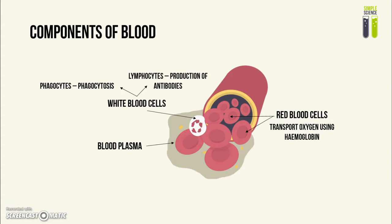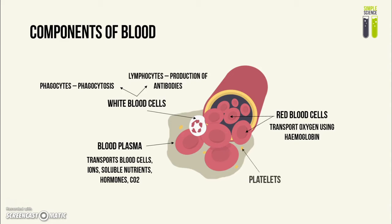Then you have the blood plasma which transports blood cells, ions, soluble nutrients, hormones, and waste like CO2. And then you've got the little cell fragments which are called platelets, and these are involved in the blood clotting process.